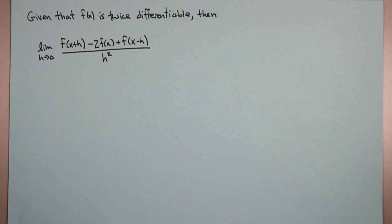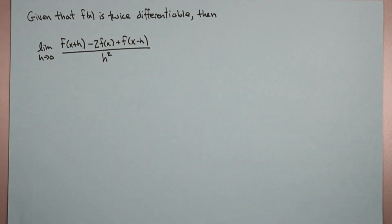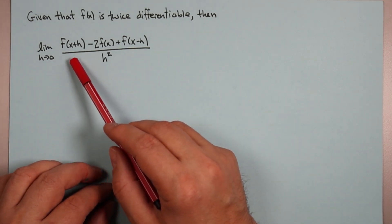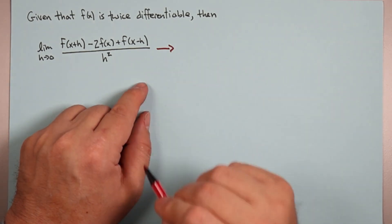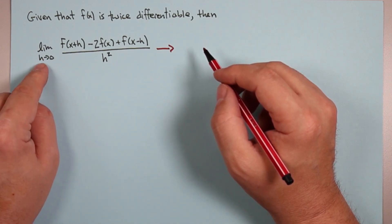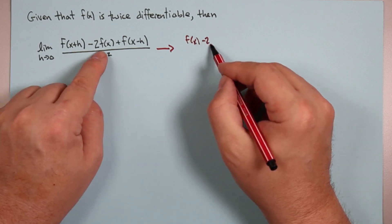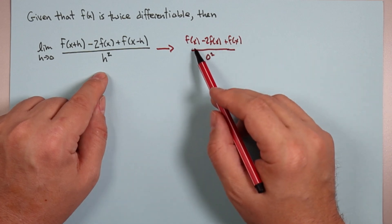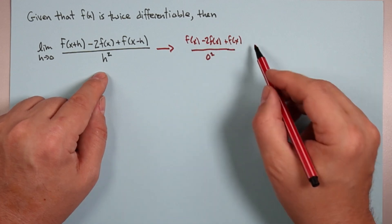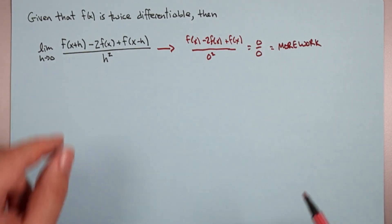Here's an interesting one. Given that f(x) is twice differentiable — meaning you can take two derivatives — find the limit as h goes to zero of f(x+h) minus 2f(x) plus f(x minus h) over h². Well, that's indeterminate. Let's test: plug in h=0. We get f(x) minus 2f(x) plus f(x) over 0 squared. The numerator cancels to zero, downstairs we have zero. Zero over zero — indeterminate, more work.